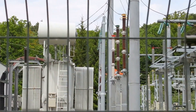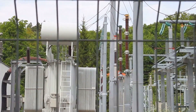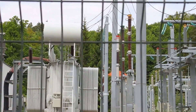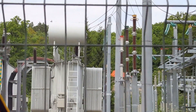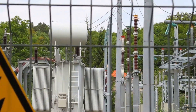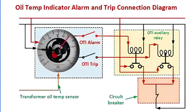Moving on to mechanical protection, which involves the oil temperature trip relay, winding temperature trip relay, pressure relief valve, and Buchholz relay. Starting with the oil temperature trip relay: this device monitors the oil temperature, acting swiftly when it detects an increase beyond a predetermined value, typically a sign of an internal fault.